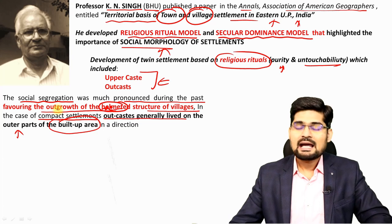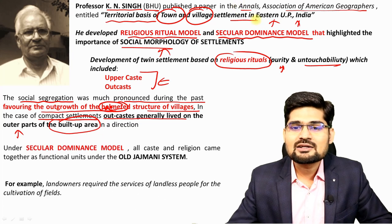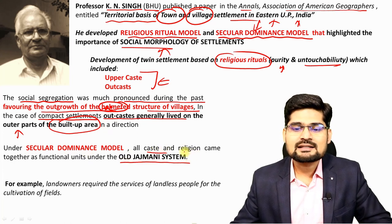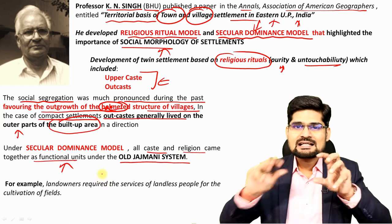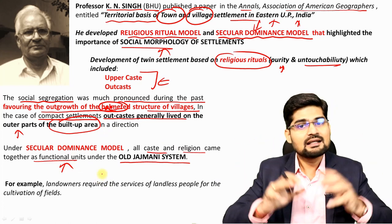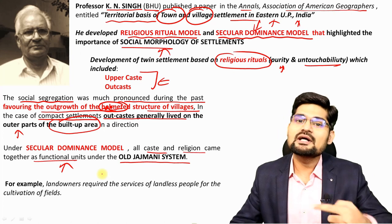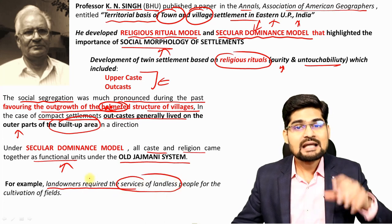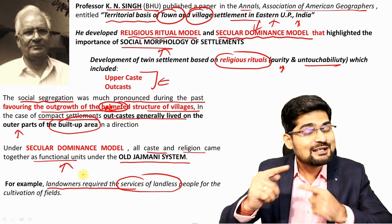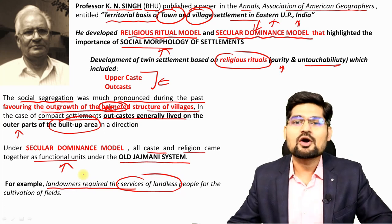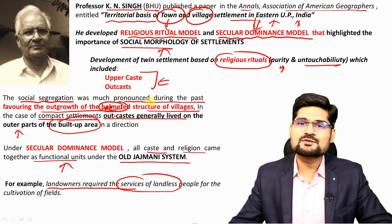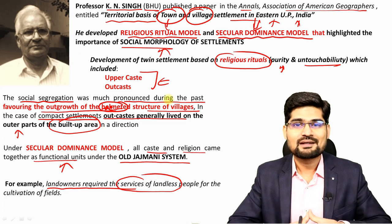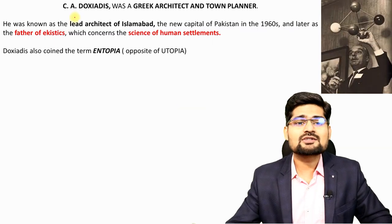Through the secular dominance model, the old jajmani system is observed, where all castes and religions came together as functional units with segregated functions in society. They lived together but dominance remained with the upper ones. For example, landowners required the services of landless people, so they kept them in proximity — but not too close. These two models — the religious ritual model and the secular dominance model — played a pivotal role in shaping Indian rural settlement morphology.